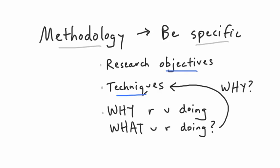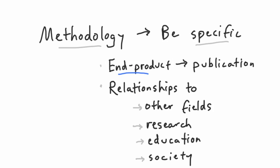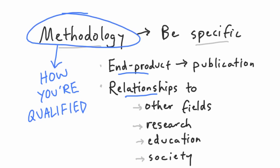Why are you doing what you're doing? For example, how did you choose your techniques? Explain the end product of your research, whether it's a book, a film, or some other form of publication. How does your topic relate to other fields, research, education, and society? These clarifications will help establish how you're qualified to do this research and why you deserve to present in Vancouver.